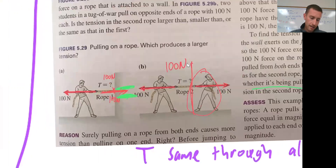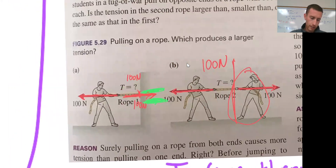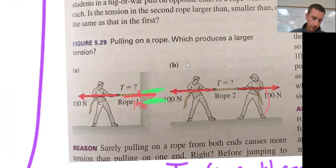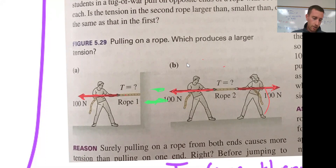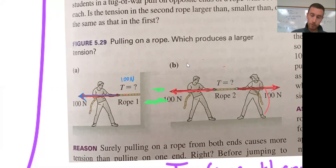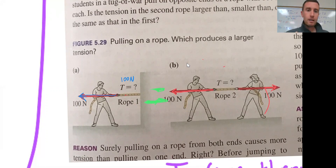If we take a look at two people here who are pulling on the rope, in the first situation, I see this man pulling on the rope, and he's pulling backwards. That means he's exerting a force in this direction of 100 Newtons. So the tension that would be exerted on that rope is 100 Newtons. He's pulling with 100 Newtons, and the tension all the way along the rope is 100 Newtons.